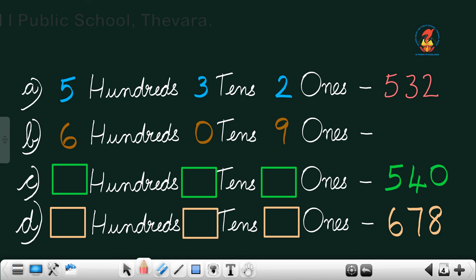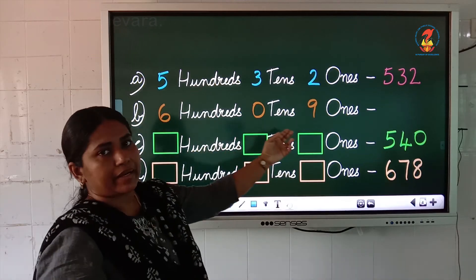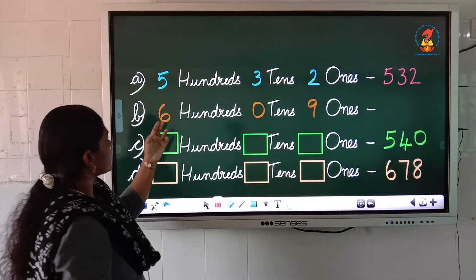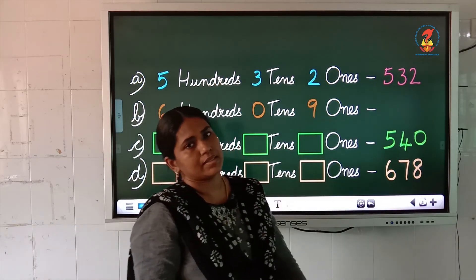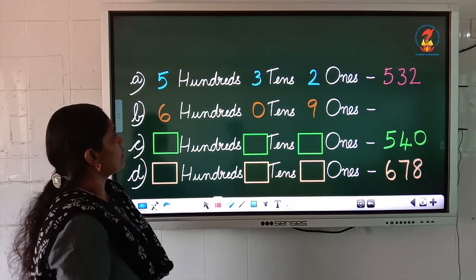Now, look at the next question. Again, an expanded form is given here. 600s, 0, 10s, 9, 1s. You have to find out the number. Try to find out.